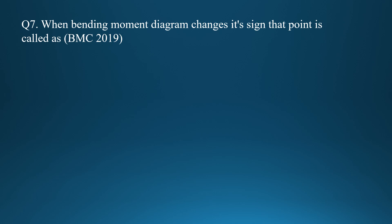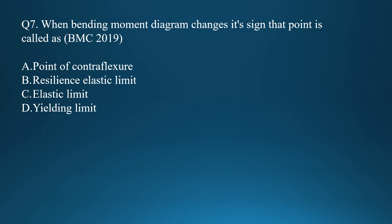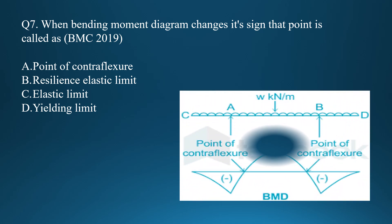Question six: when the bending moment diagram changes its sign, that point is called the point of contraflexure. Option A is correct. If the shear force diagram changes its sign, that point is the point of contrast shear — when the sign changes from positive to negative or negative to positive.